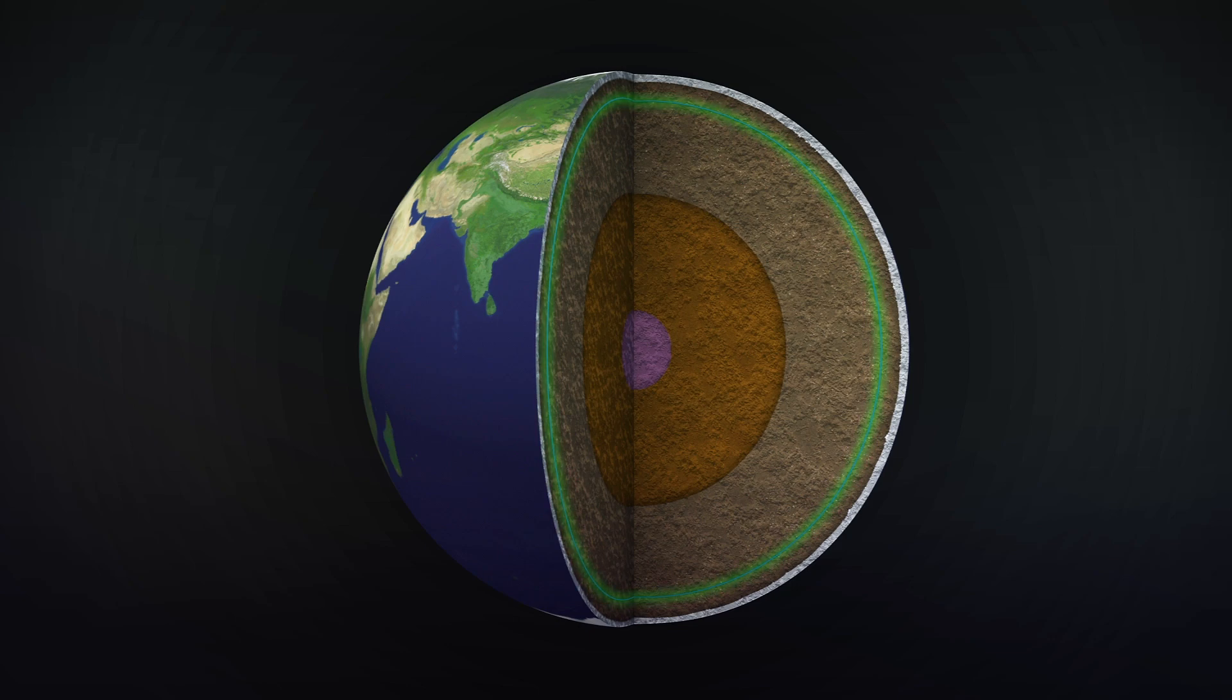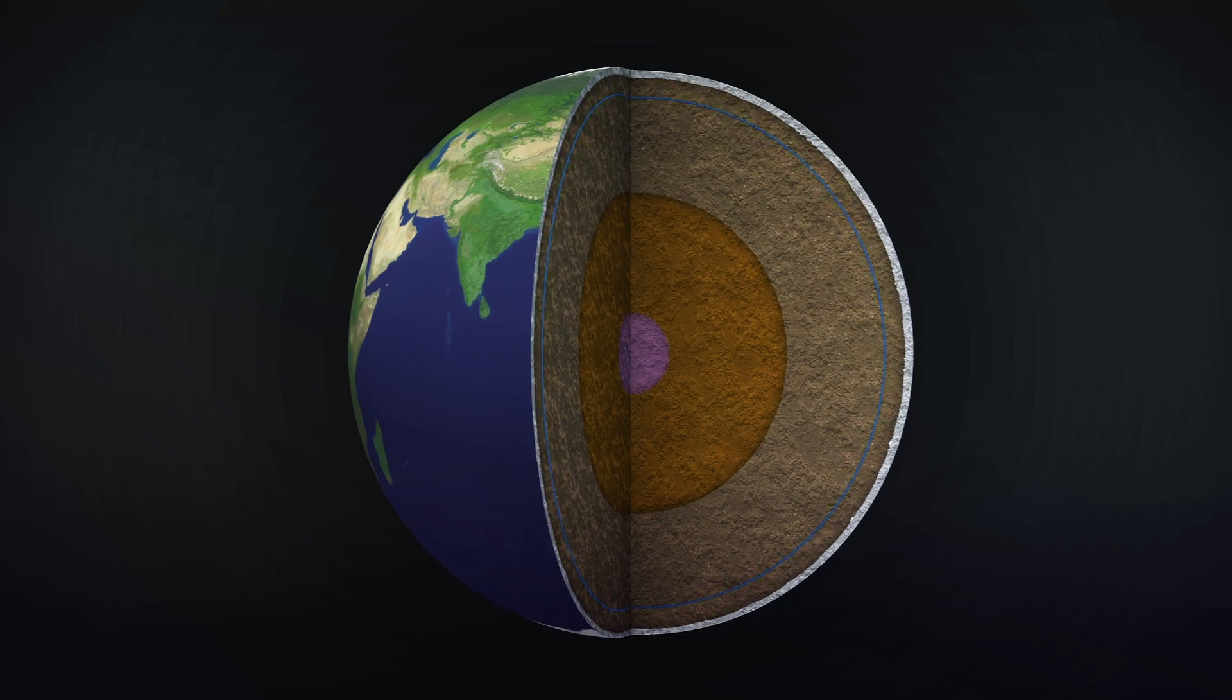This indicates that the core consists of material from the Earth's mantle transition zone, which is 250 to 400 miles beneath the planet's crust.